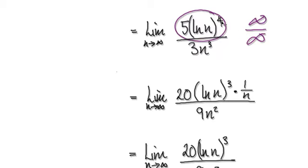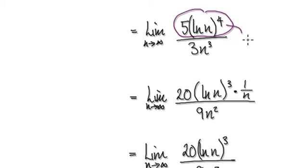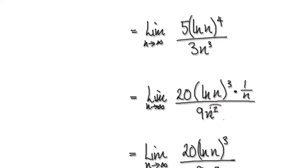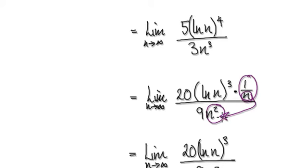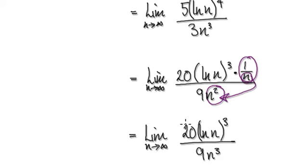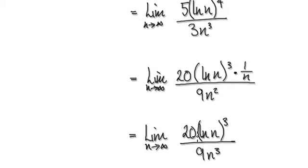We're going to apply L'Hôpital's rule again. If you differentiate the top it gives you this, and differentiate the bottom it gives you this - because you've got this n here, it brings it back up to n to the power of three. You can see it's going around in circles.